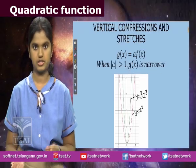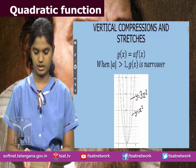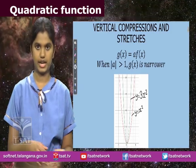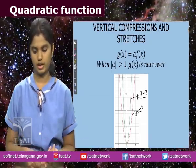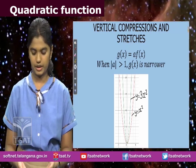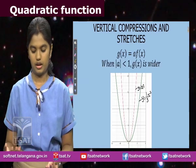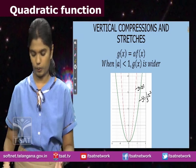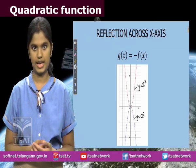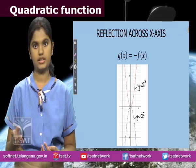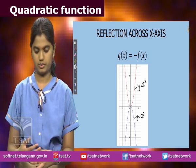For vertical compressions and stretches: when the value of a is greater than 1, the parabola becomes narrower. Since the parent function y = x² has a = 1, stretching by a value of 3 gives y = 3x². If the value of a is a fraction, the parabola becomes wider, as shown by y = (1/3)x². Reflection across the x-axis is another important transformation, where the value of f(x) or y is reversed because the sign is completely changed.